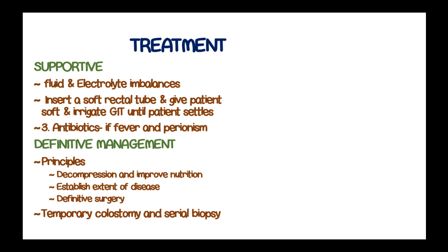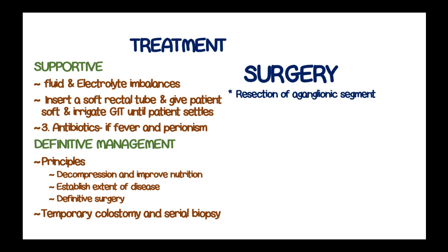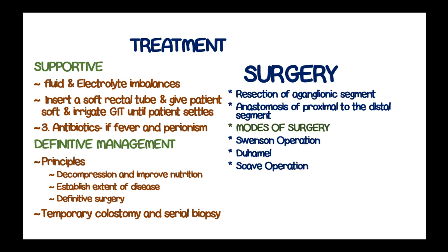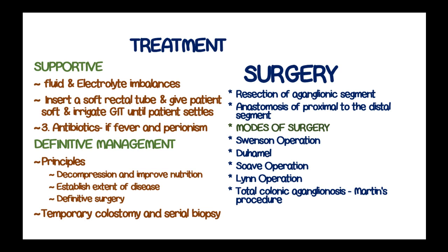Temporary colostomy and serial biopsy are done with resection of the aganglionic segment, followed by anastomosis of the proximal to the distal segment. Several surgeries are used in Hirschsprung's disease, such as the Swenson operation, Duhamel operation, Soave operation, Lynn operation, and for total colonic aganglionosis, Martin's procedure.